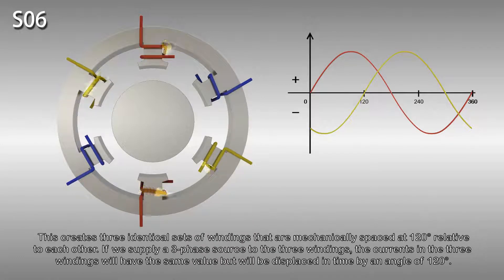This creates three identical sets of windings that are mechanically spaced at 120 degrees relative to each other. If we supply a three-phase source to the three windings, the currents in the three windings will have the same value but will be displaced in time by an angle of 120 degrees.